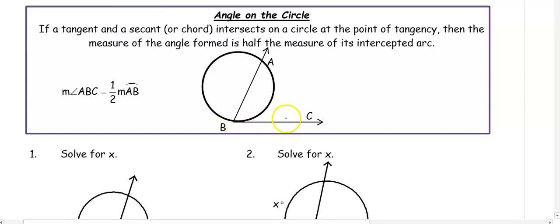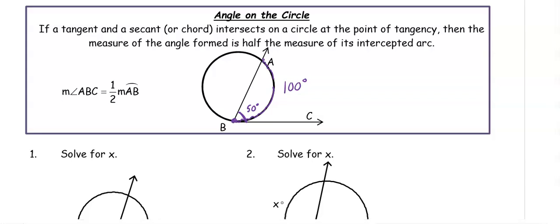In this case, we have BC, which would be a tangent line, and AB, which would be a secant line. The angle here is intercepting the arc from A to B. So if arc AB has a measure of 100, the angle is half the arc, which is 50 degrees. The angle vertex is still on the circle, just like an inscribed angle, so it has the same relationship: your angle is half the measure of the arc.